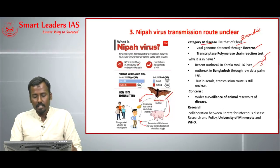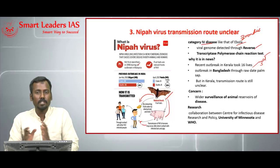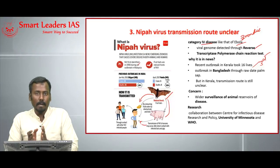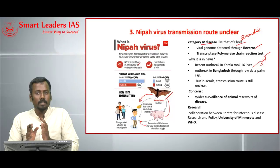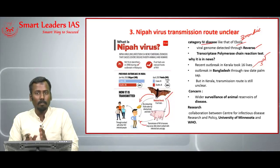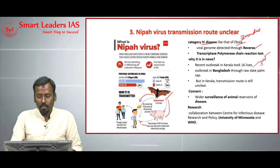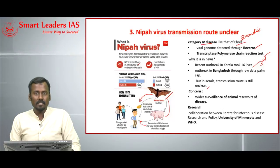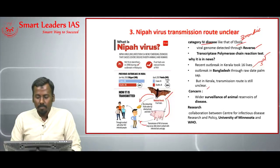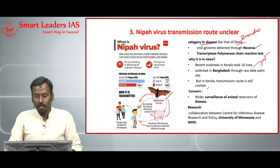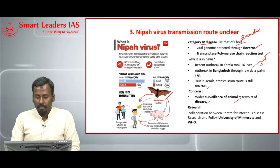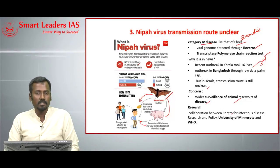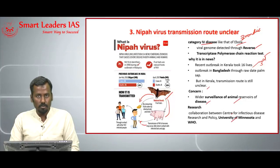The earlier outbreaks occurred through Bangladesh, in West Bengal and parts of Odisha, mainly due to consumption of dead palm sap toddy. In Kerala, consumption of dead palm sap toddy is not very common, so the transmission route is still unclear. The government should start wider surveillance of animal reservoirs of disease. Research to curtail Nipah virus is being undertaken through collaboration between the Center for Infectious Disease Research and Policy at the University of Minnesota and WHO.